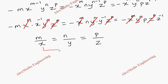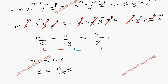Equating the first and second terms and cross-multiplying: m·y = n·x, so y = (n/m)·x. Similarly, equating the second and third terms: n·z = p·y, so z = (p/n)·y.